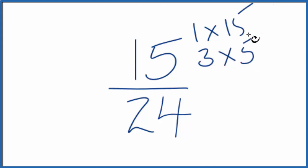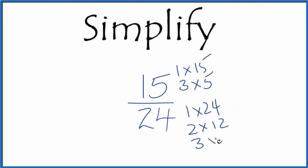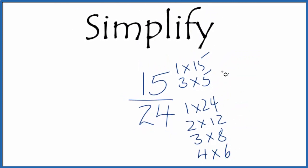3 times 5, and that's about it. For 24, we have 1 times 24, 2 times 12, 3 times 8, and 4 times 6.